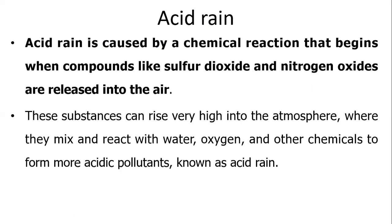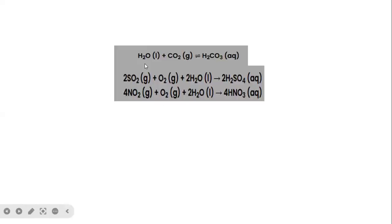Acid rain is caused by a chemical reaction that occurs when compounds like sulfur dioxide and sulfur trioxide are released into the air. These can rise very high into the atmosphere, where they mix with water, oxygen, and other chemicals to form more acidic pollutants known as acid rain. Water reacts with carbon dioxide to produce carbonic acid, and sulfur dioxide reacts with water and oxygen to produce sulfuric acid.